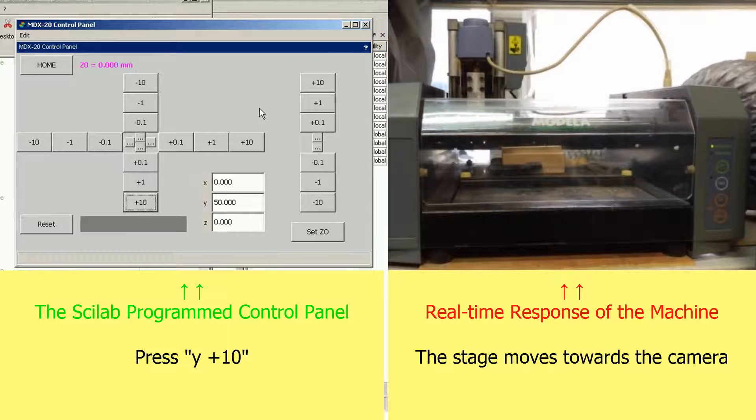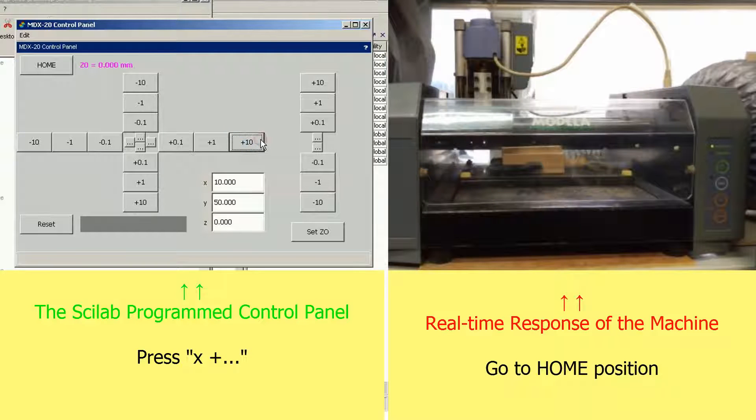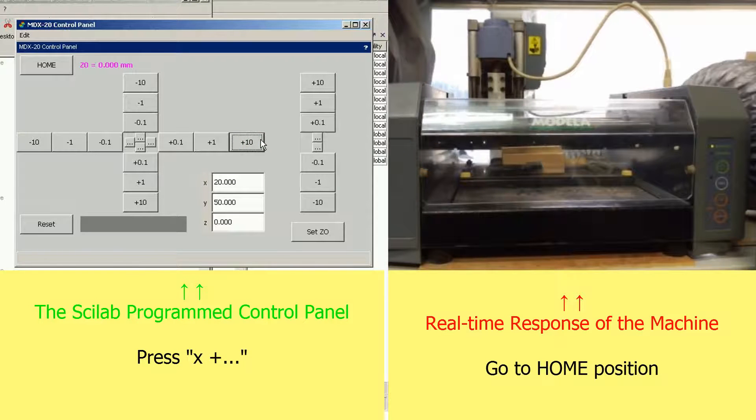The largest displacement is 10mm. There are also buttons for you to move 1mm, 0.1mm and also just one step. The minimum step of our machine is 0.025mm.